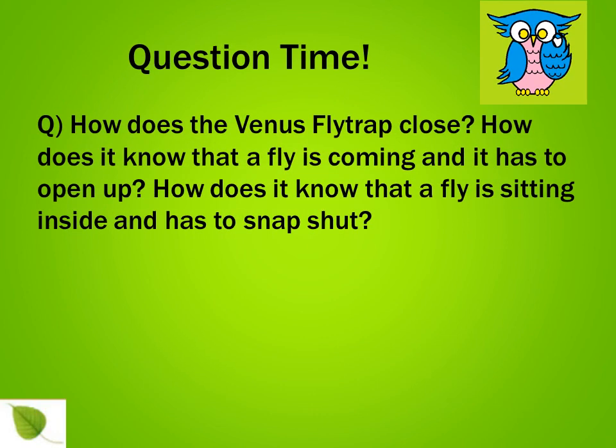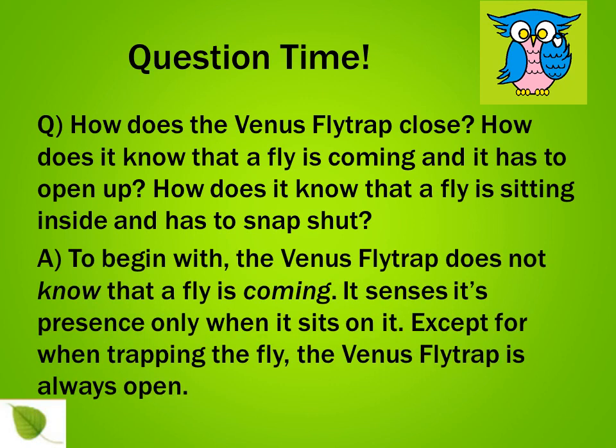Question time. How does the Venus flytrap close? How does it know that a fly is sitting inside and has to snap shut? The Venus flytrap does not know that a fly is coming — it senses its presence only when the fly sits on it. Except for when trapping the fly, the Venus flytrap is always open.